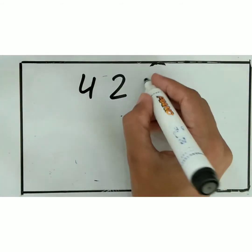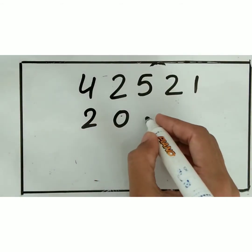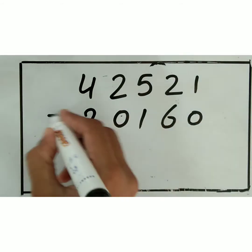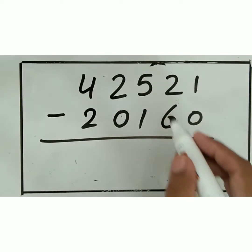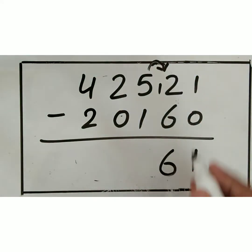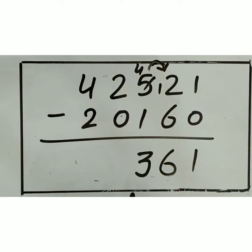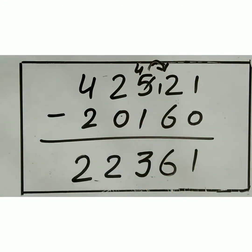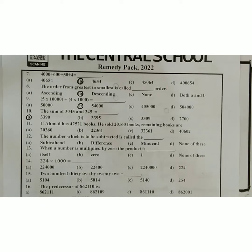On the board: forty-two thousand five hundred twenty-one minus twenty thousand one hundred sixty. One minus zero is one; can't subtract six from two, so carry — twelve minus six is six; four minus one is three; two minus zero is two; four minus two is two. The answer is twenty-two thousand three hundred and sixty-one. Circle the correct option.